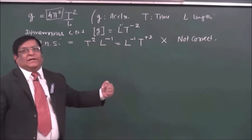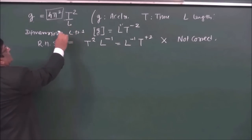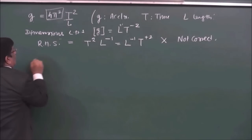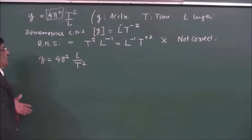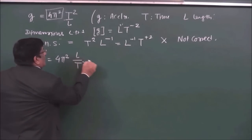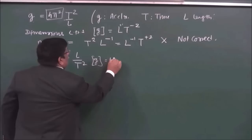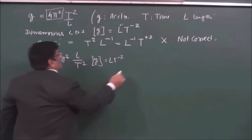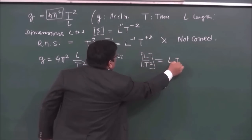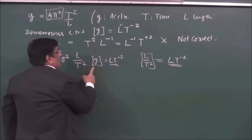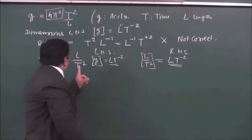There was an error. Actually g is directly proportional to l and inversely proportional to t², so the corrected formula is g = 4π²l/t². Checking: RHS dimensions are L/T² = LT⁻², which matches LHS LT⁻². So this formula is dimensionally correct.